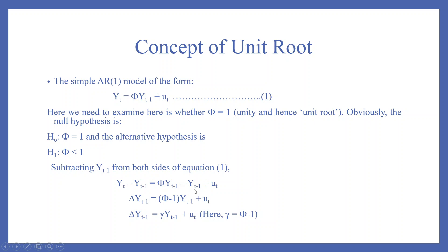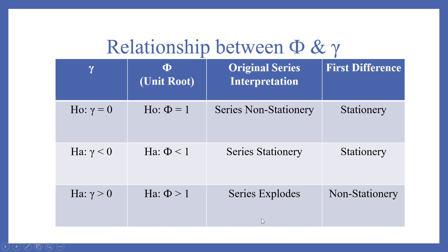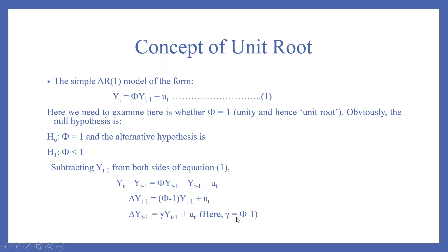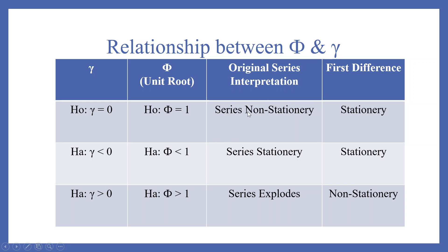Subtracting Yt minus 1 from both sides of the equation, we get delta Yt equals phi minus 1 times Yt minus 1 plus Ut, where gamma equals phi minus 1. So the equation becomes delta Yt equals gamma times Yt minus 1 plus Ut. Under the null hypothesis, gamma equals 0, which means phi equals 1 — the original series is non-stationary, but in first difference the series is stationary.